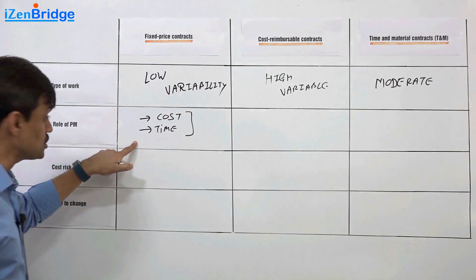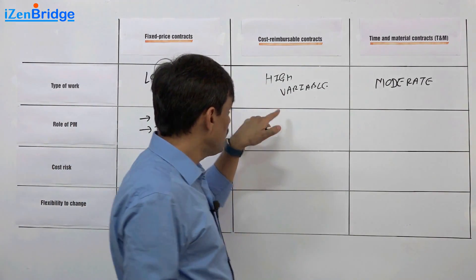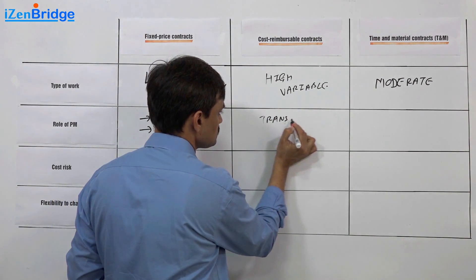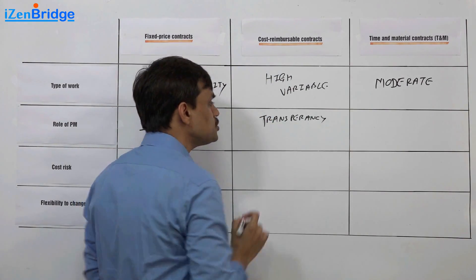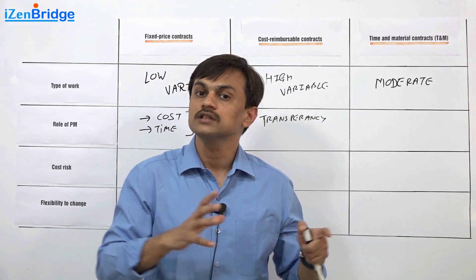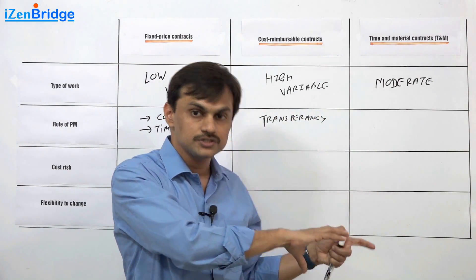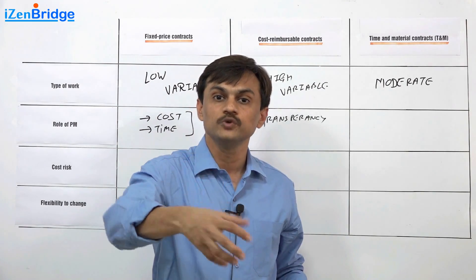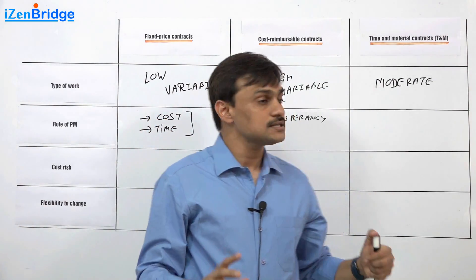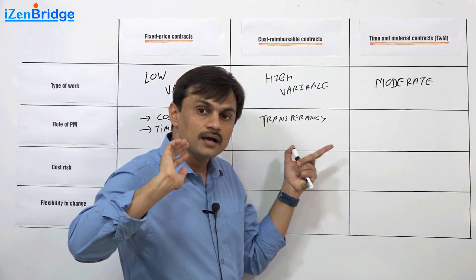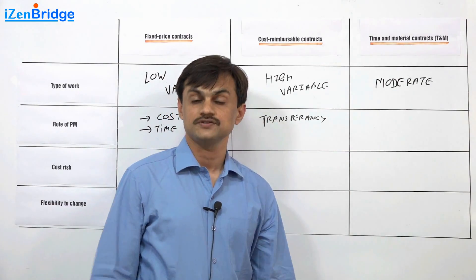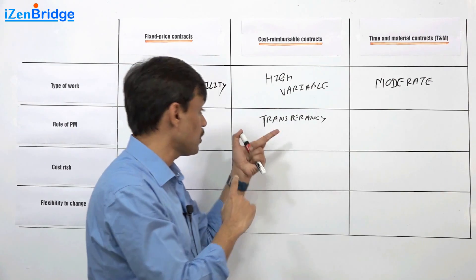In a cost reimbursable case, if you are a project manager, your focus becomes more on transparency. You need to ensure that you keep record of what you are buying, why you are buying. You need to ensure that you have a proper history of all the approvals you take from sponsors or customers for that work, so that it doesn't happen that without approval you end up buying something and the buyer says he is not going to reimburse the cost. The focus for a project manager is just keep the customer, keep the buyer informed about everything. Buyer should be making all the decisions related to purchases and your project manager should have all the signatures.